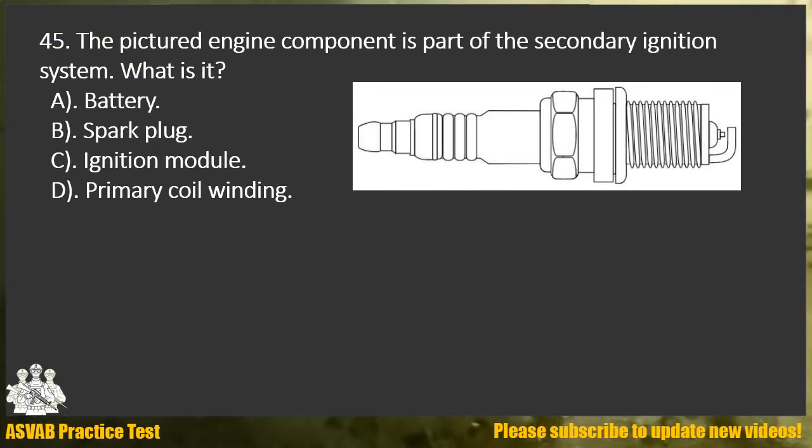Question 45. The pictured engine component is part of the secondary ignition system. What is it? A. Battery. B. Spark plug. C. Ignition module. D. Primary coil winding.